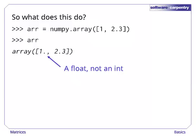If we give NumPy initial values of different types, it finds the most general type, in this case float, and uses that for all elements.